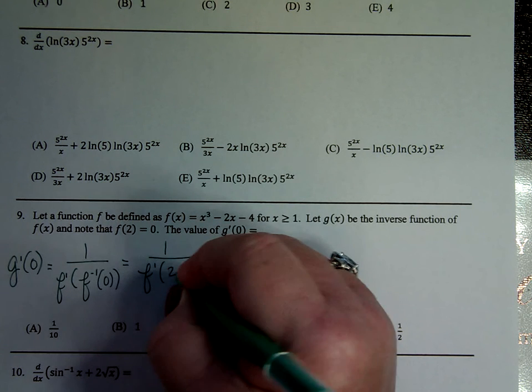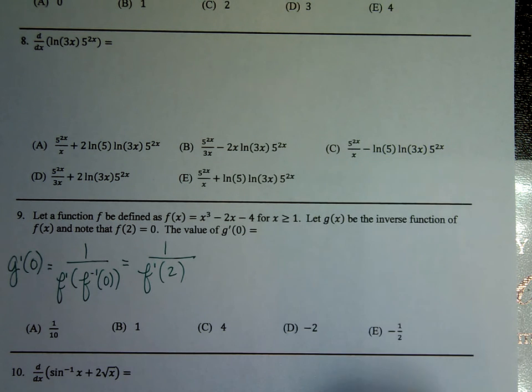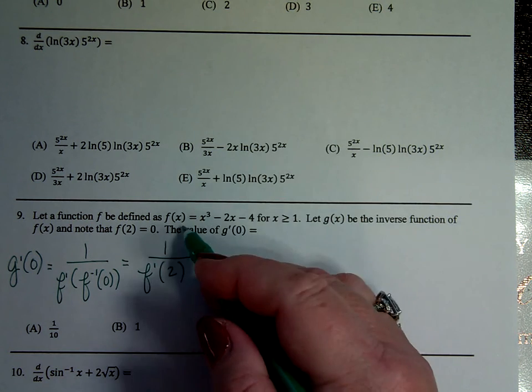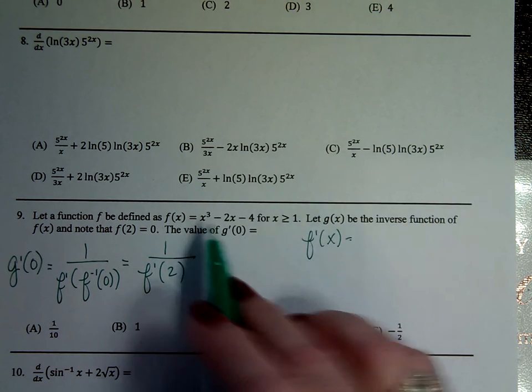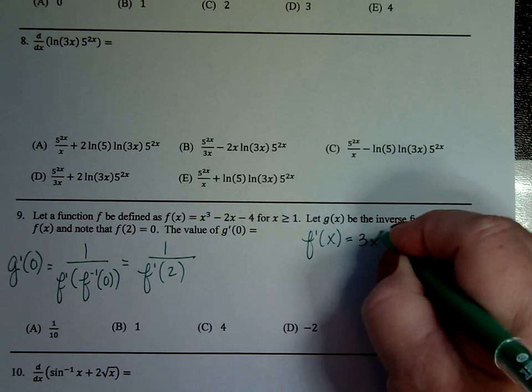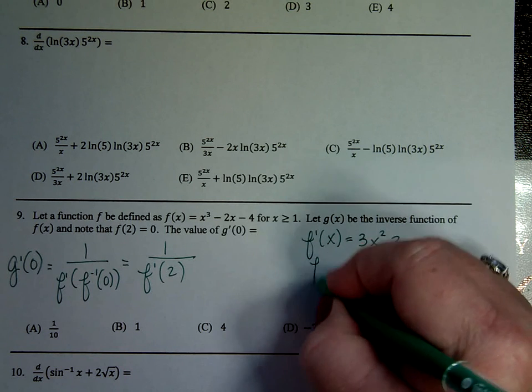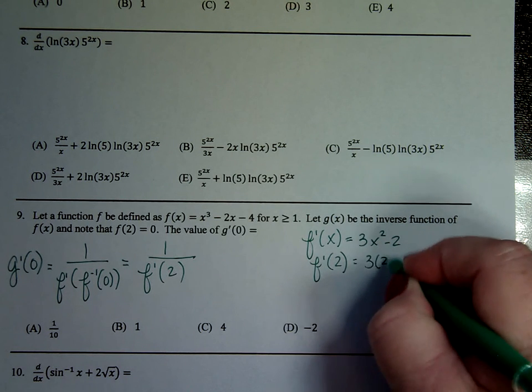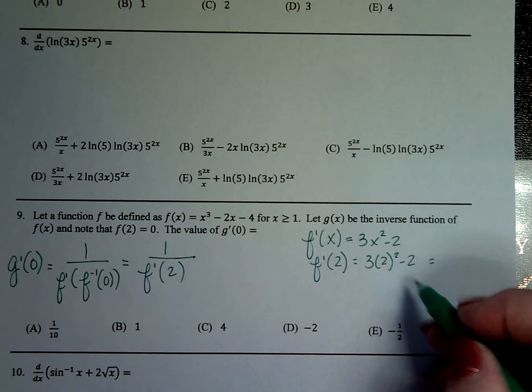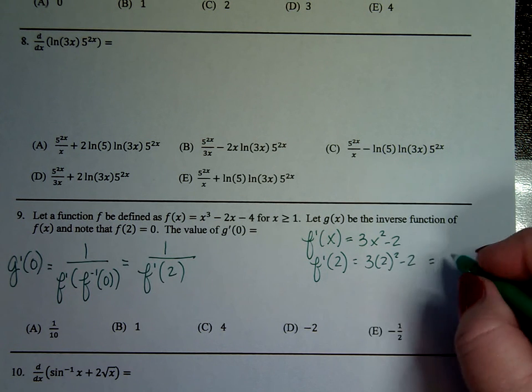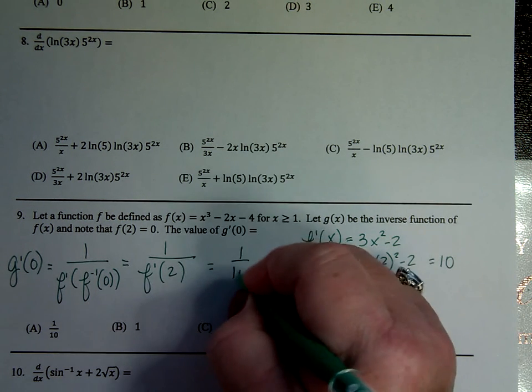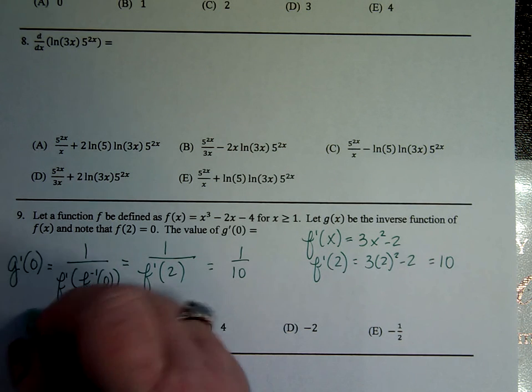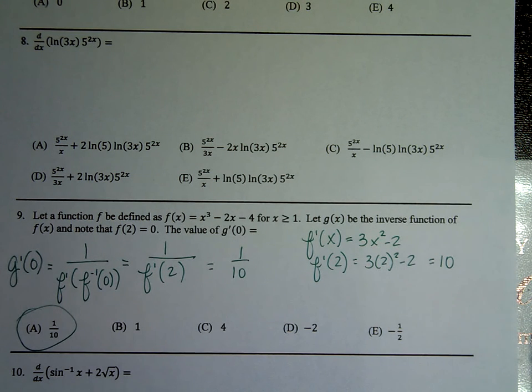And so, I don't know. But I can surely figure out what f prime of x is. I've got my equation here. So I've got 3x squared minus 2. If I want to know what f prime of 2 is, I've got 3 times 2 squared minus 2. That is 4 times 3 is 12. 12 minus 2 is 10. And so, I get an answer that is 1 over 10. Is that my choice? Sweet. It is.